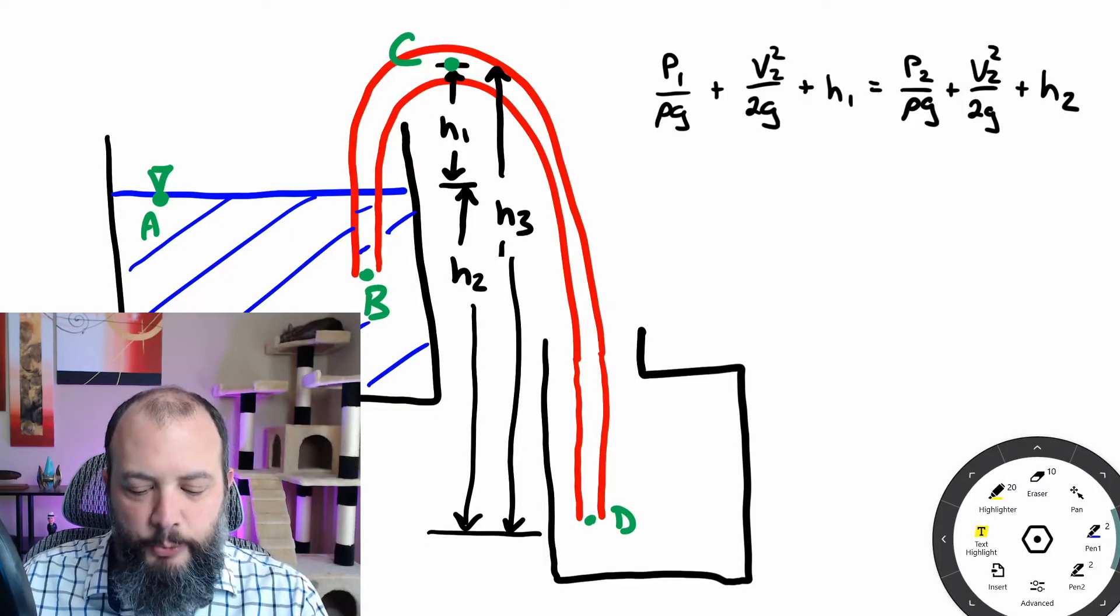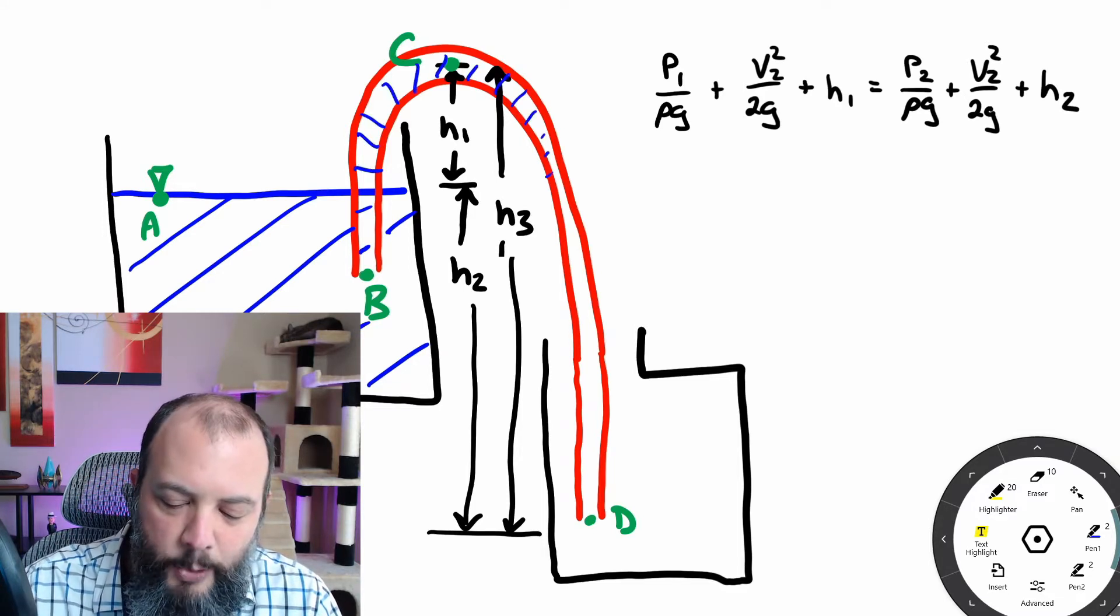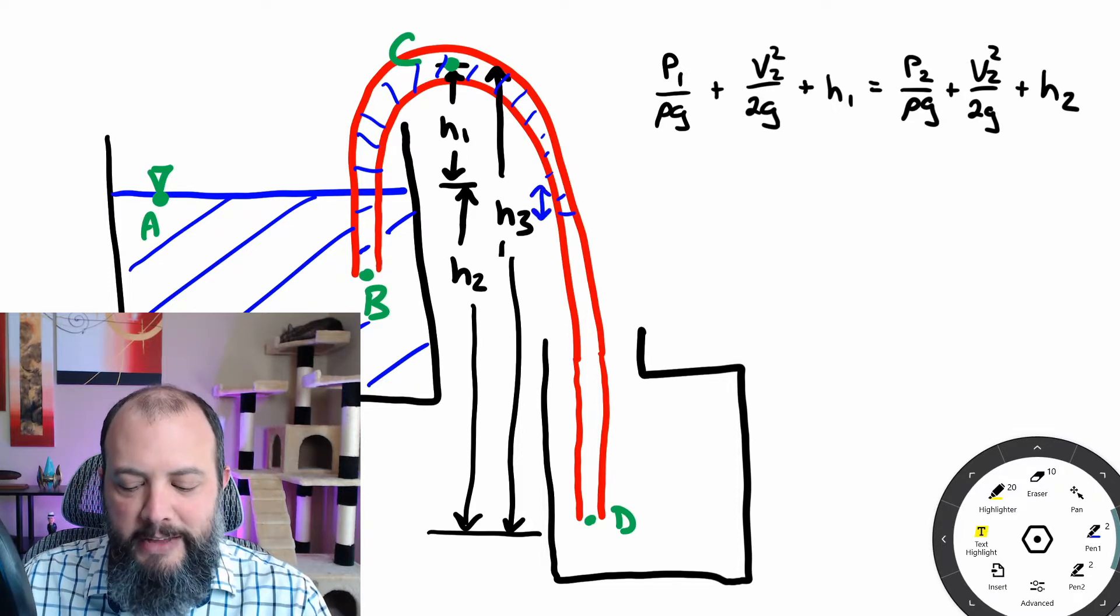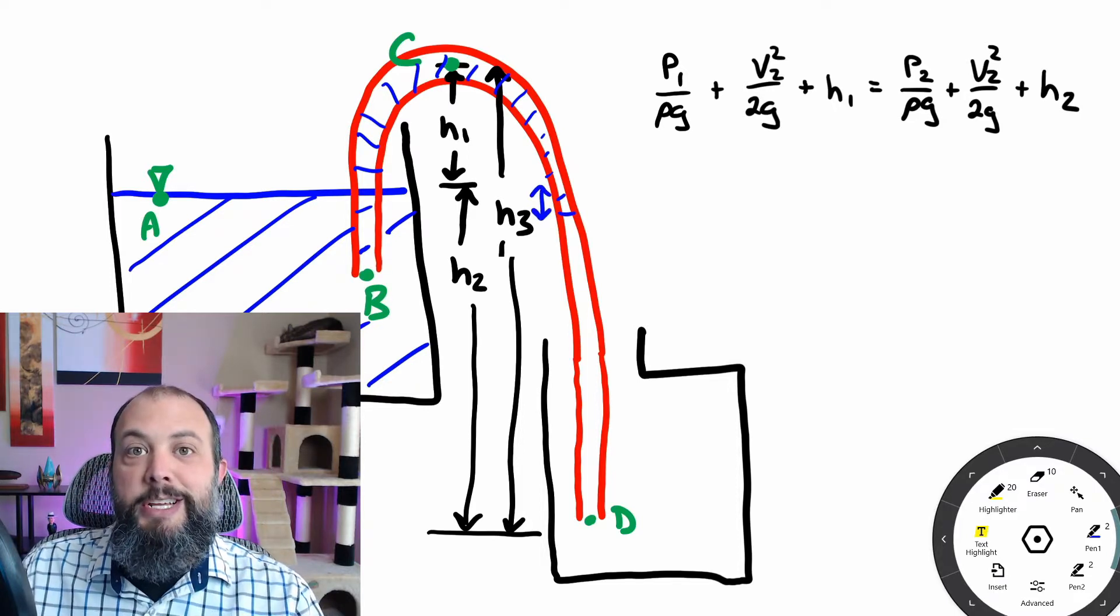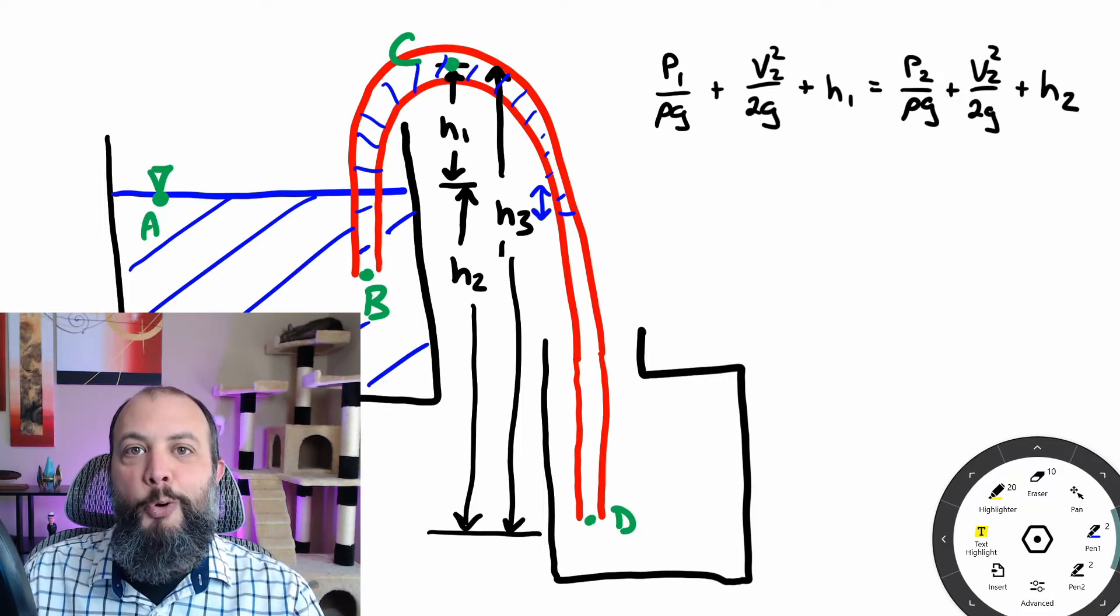So let's start off by talking about how a siphon works. In order to start a siphon, you need to get water into the tube such that there's enough water in the siphon that it is below the initial height of the source you are siphoning from. And once that achieves, you don't have to do anything. The water will keep flowing until water in the large tank gets down below point B.